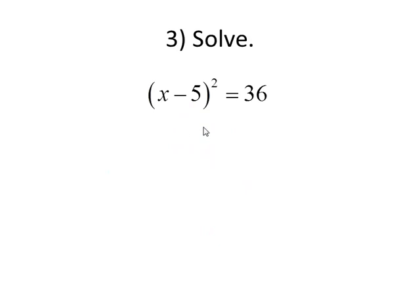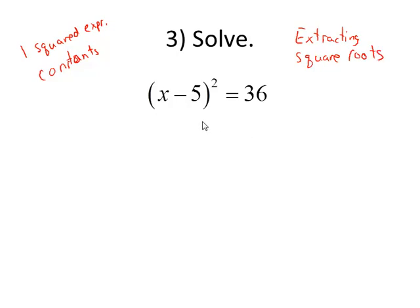Here, we have a squared expression equal to a number. If your equation only contains one squared expression, and the rest of the terms are all constants, then you want to take a look at extracting square roots. The idea here is to isolate the squared expression, take the square root of both sides, and solve from there.